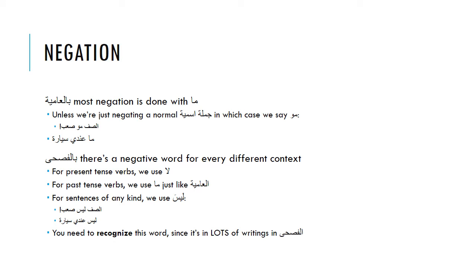To negate these sentences in عامية is easy — just put ما. We often use ما to negate almost anything. The only exception is مو, which we usually use to negate between a مبتدأ and خَبَر when the خَبَر is an adjective. But if we're talking about عَند or في, we just say ما: ما عندي سيارة. In فصحى, for present tense verbs we use لا, for past tense verbs we use ما just like in عامية, and for nominal sentences we use ليس. So in فصحى: ليس عندي سيارة. You need to recognize ليس since it appears frequently in فصحى texts.